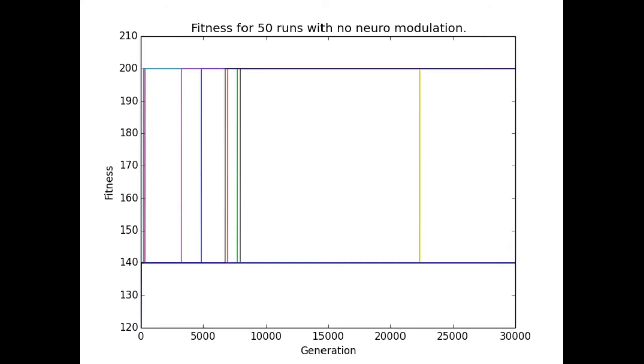Here we see the fitness over time for 50 independent runs of evolution with no neuromodulation. Note that some agents do solve the problem, reaching the best score of 200.